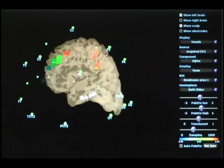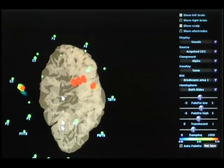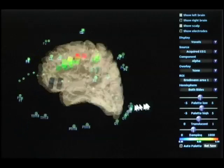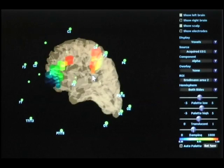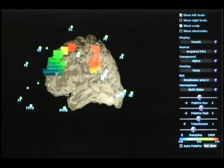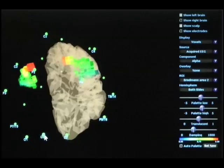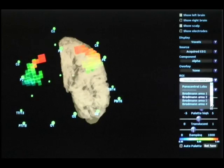This, for example, would be Brodmann area 1 in the vicinity of motor processing and sensory information. Then we have Brodmann area 2, motor strip activity. Again, we see more activity on the right than the left.